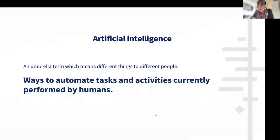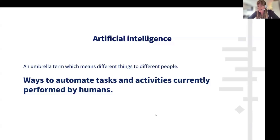Over the last three decades, we've seen a lot of change in terms of technology's role in health evidence synthesis. Artificial intelligence is an umbrella term and it means different things to different people. The aim to maximise the use of technology to automate tasks currently performed by humans has been the goal of groups like the International Collaboration for Automation of Systematic Reviews, or ICASAR, for over a decade now.